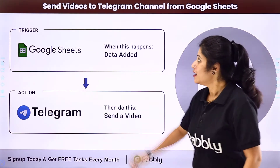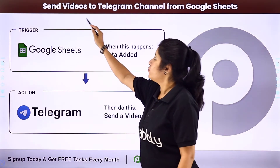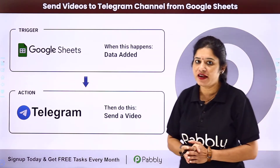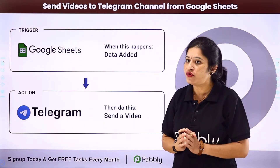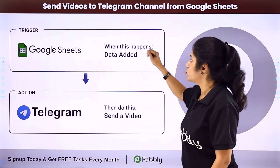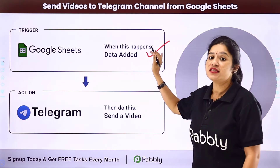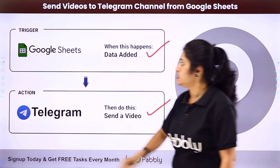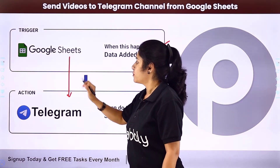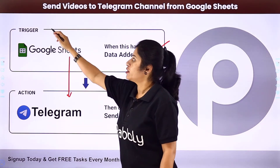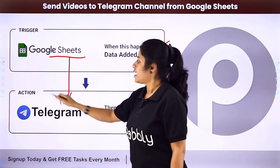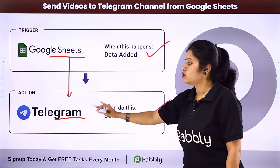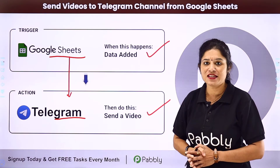In this video, we are going to learn how you can send videos to a Telegram channel from Google Sheets. The idea is that whenever you add a new video URL to your Google Sheet, automatically the same video should get posted on your Telegram channel. Your trigger application would be Google Sheets and your action application would be Telegram. We'll integrate both using Pabbly Connect.